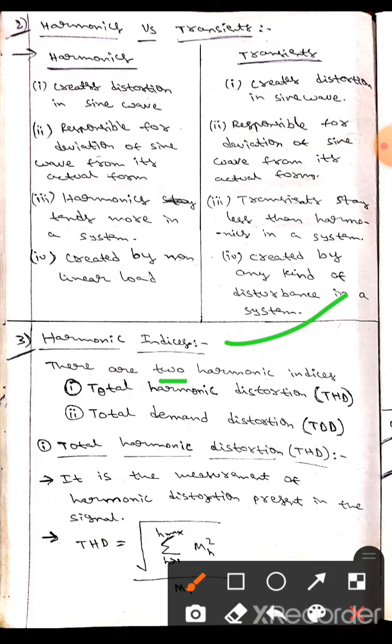There are two types of harmonic indices. One is the total harmonic distortion, in short we can call it THD. The other one is total demand distortion, in short it is known as TDD.